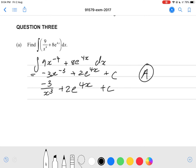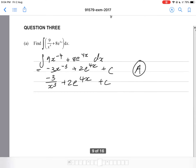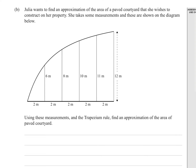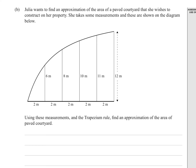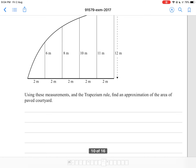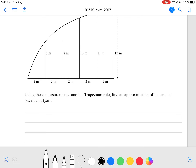That's an achieved grade there. Question 2: Julia wants to find an approximation of the area of a paved courtyard that she wishes to construct on her property. She takes some measurements shown on the diagram below. Using these measurements and the trapezium rule, find the approximation of the area of the paved courtyard.